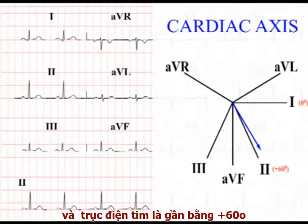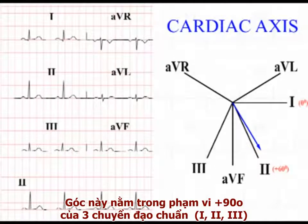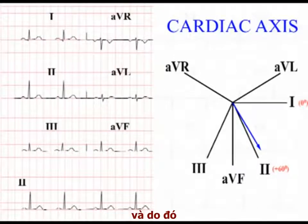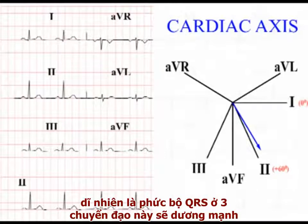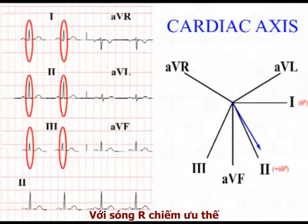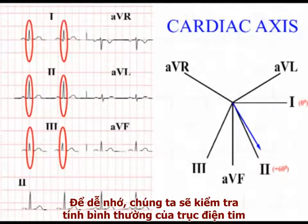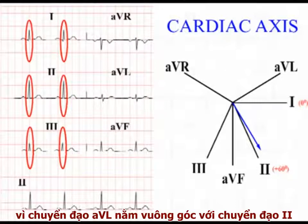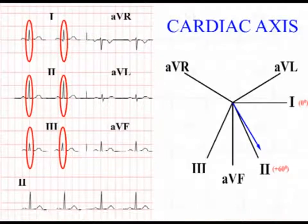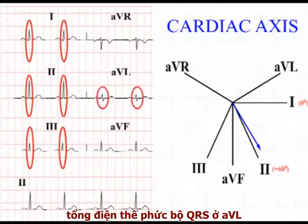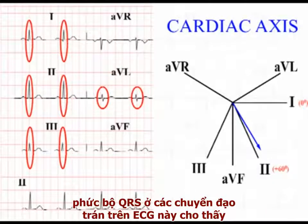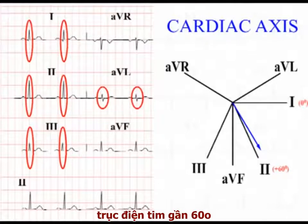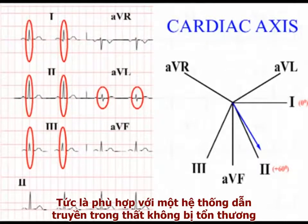With the cardiac axis close to plus 60 degrees, this is well within 90 degrees of the three standard leads, and in this normal situation the QRS complexes in these three leads are strongly positive with dominant R-waves. Get into the habit of recognizing this normal pattern down the right-hand side of the ECG. Also note that as AVL lies at 90 degrees relative to lead 2, AVL tends to be close to isoelectric in this situation. The pattern of QRS complexes in the frontal leads on the ECG indicates that the cardiac axis lies at approximately 60 degrees and is consistent with an intact intraventricular conducting system.